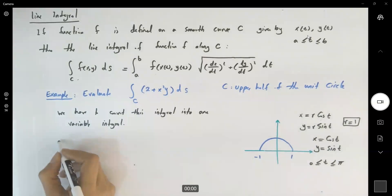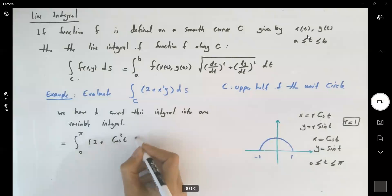So this integral becomes the integral 0 to pi 2 plus cosine squared times sine. And here you have your ds.